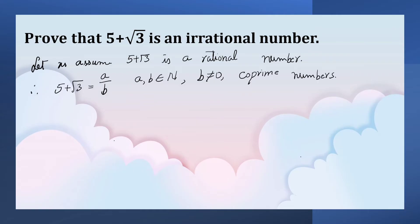5 is transposed to RHS. So, root 3 is equal to A upon B minus 5. It implies that root 3 is equal to A minus 5B upon B, because B is the LCM.